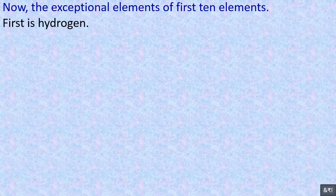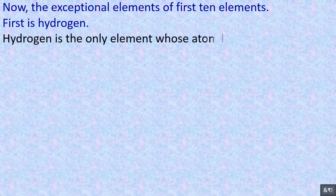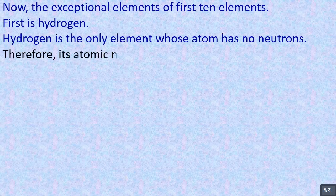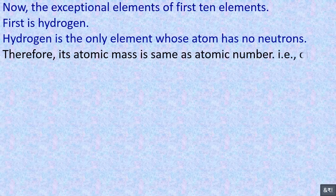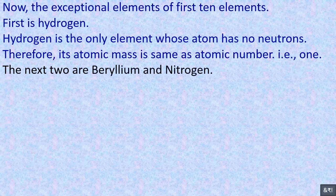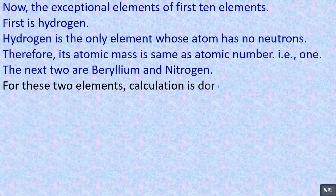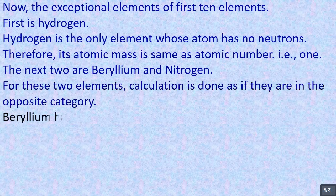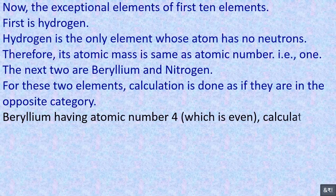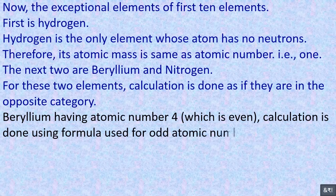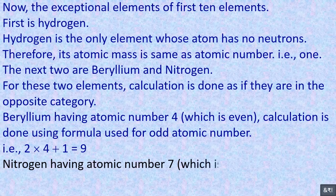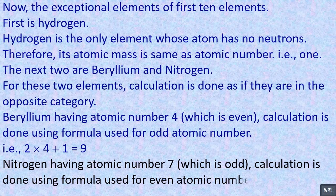Now the exceptional elements of the first 10 elements. First is hydrogen — hydrogen is the only element whose atom has no neutrons; therefore its atomic mass is the same as its atomic number, that is 1. The next two are beryllium and nitrogen. For these two elements, calculation is done as if they are in the opposite category. Beryllium has atomic number 4, which is even, but calculation is done using the formula for odd atomic number: 2 multiplied by 4 plus 1 equals 9. Nitrogen has atomic number 7, which is odd, but calculation is done using the formula for even atomic number: 2 multiplied by 7 equals 14.